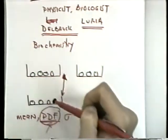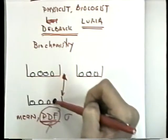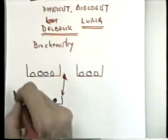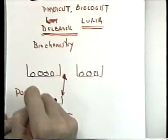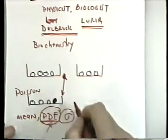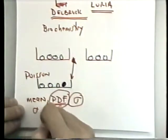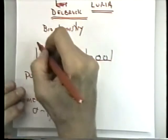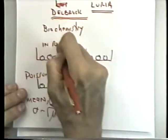If we have a certain number of cells and a low probability of getting a mutation, the number of mutant colonies at the end of the experiment will follow a Gaussian distribution. In the limit at which the probability of mutations is small, this becomes a Poisson distribution, and it doesn't have a big variance — the variance of a Poisson distribution goes like the square root of the mean. So this is if the mutations happen in response to the environment.